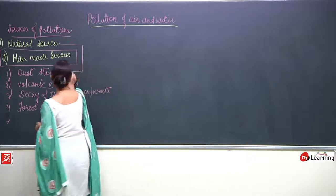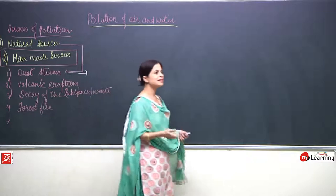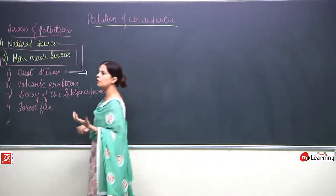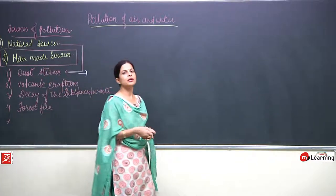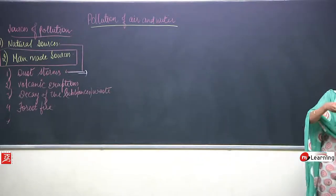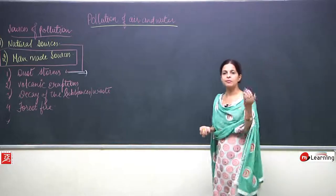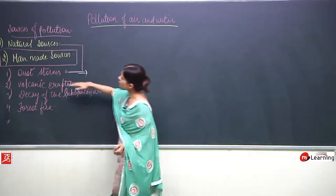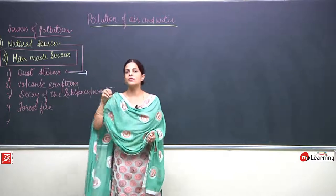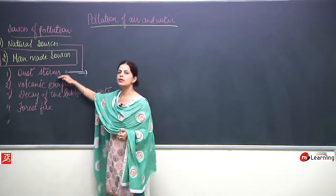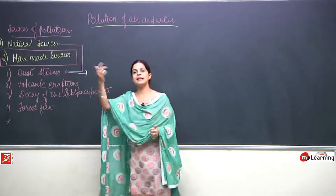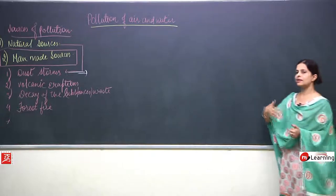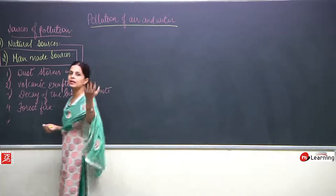The first natural source is dust storms. Many times we have witnessed heavy storms which bring dust particles into the air — particles from nature that flow from one place to another because of storms. The main pollutant here is dust: particles of dust that become visible in the air when wind blows with great speed, carrying dust along with it.